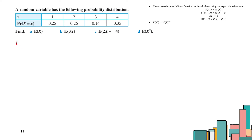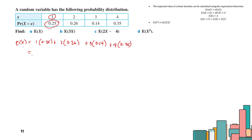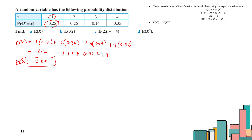First, we need to find the expected value E[X]. To find E[X], we multiply each x by its probability and sum: 1×0.25 + 2×0.26 + 3×0.14 + 4×0.35, which gives 0.25 + 0.52 + 0.42 + 1.40. So the expected value E[X] is 2.59.